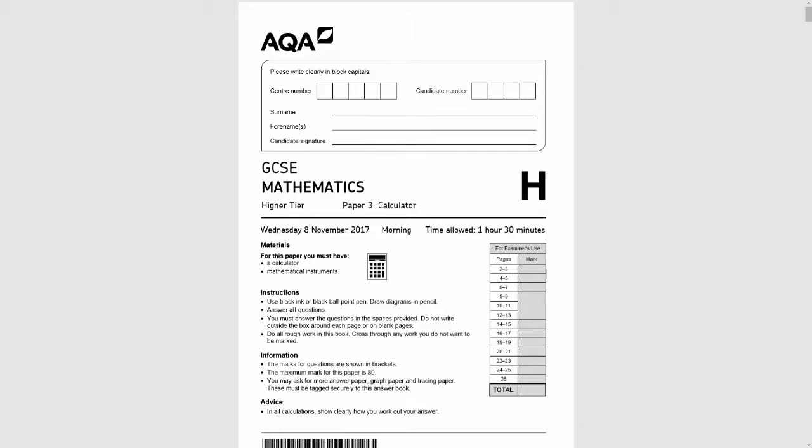Hello and welcome to another GCSE revision video. In this video we're going to be looking at the November 2017 past paper of the AQA GCSE 8300 series. This is the third paper in the higher tier. It is a calculator paper so we are allowed to use calculators.